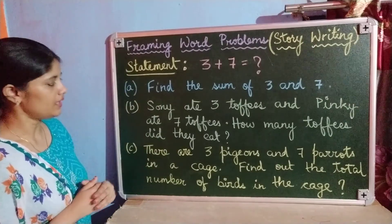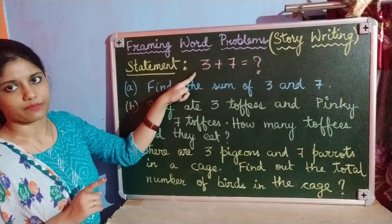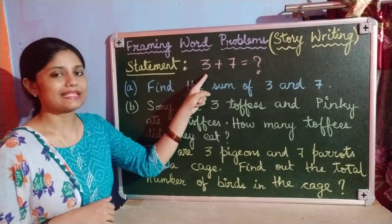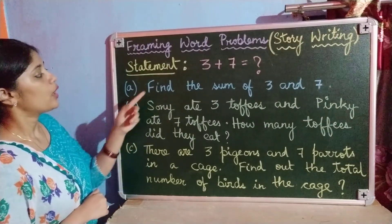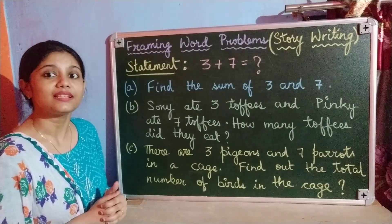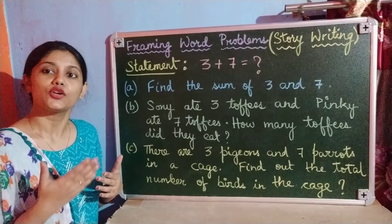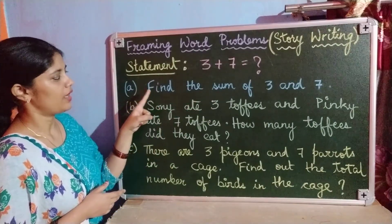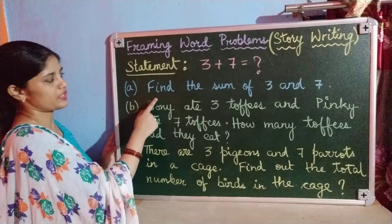So let us start. Ma'am has written 3 word problems for this given statement. Let us read them one by one. Since it is an addition statement, the first word problem is: find the sum of 3 and 7. A sum is the result obtained after adding two or more numbers. So this question is asking for the sum of 3 and 7.